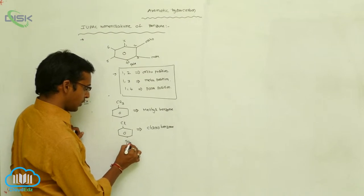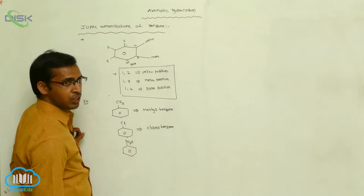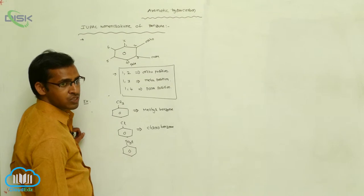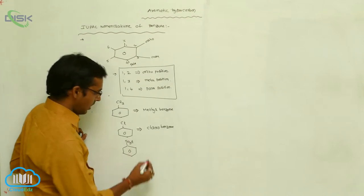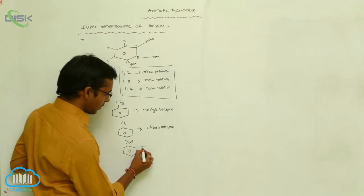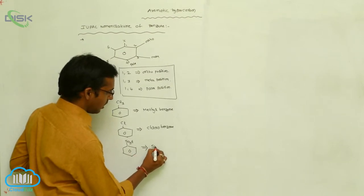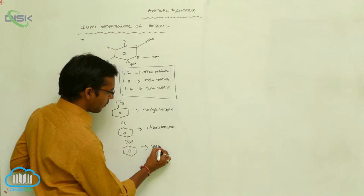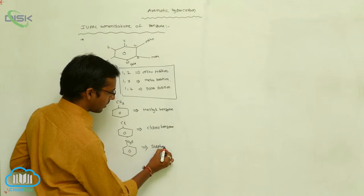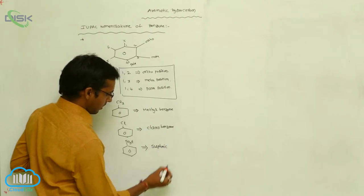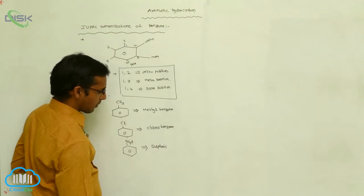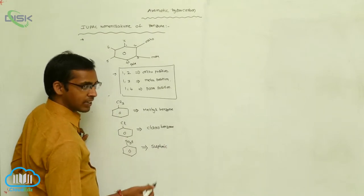If the sulfonic group is present — the sulfonic group formula is SO₃H — whenever the sulfonic group is present, the compound is called benzene sulfonic acid.